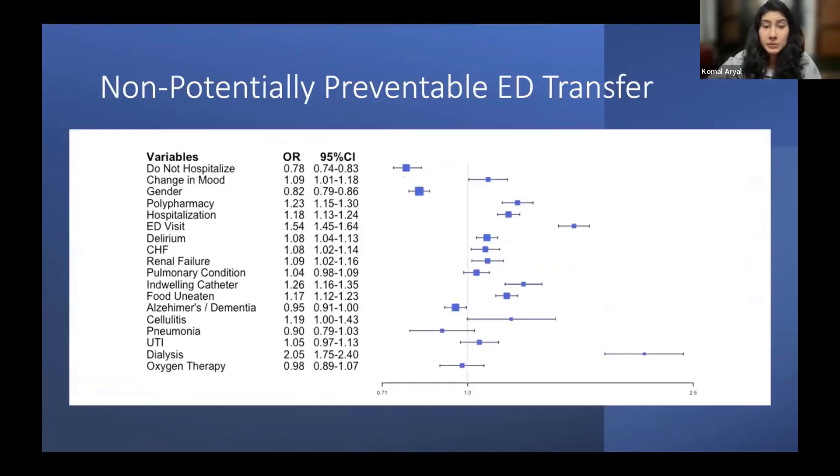Resident characteristics associated with a greater risk of a non-potentially preventable ED transfer were only experiencing a change in mood with a hazard ratio of 1.09 and delirium with a hazard ratio of 1.08. As you can see in both models, the four variables that were different between the two models were not significant. So this is something to keep in mind.